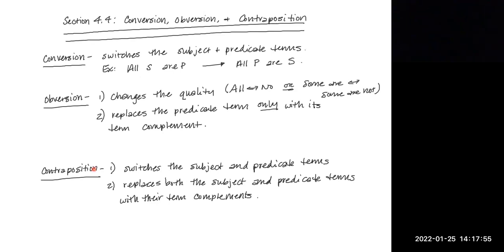Obversion and contraposition both do two things and you have to do both. You cannot do one and neglect the other. You can't cherry pick. You have to do both of these or if you're doing contraposition, you have to do both of these.